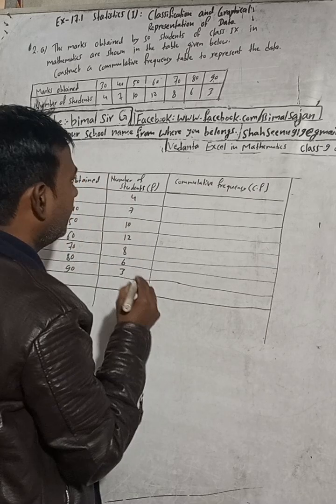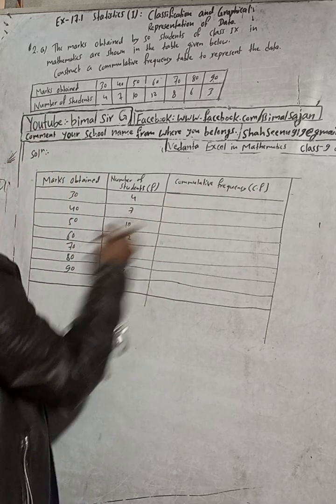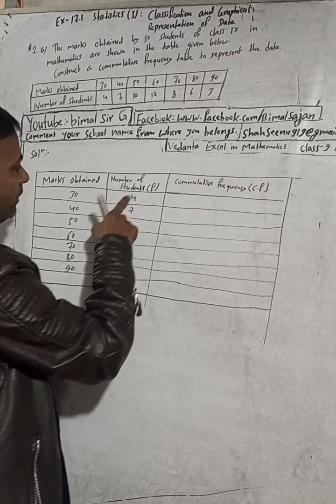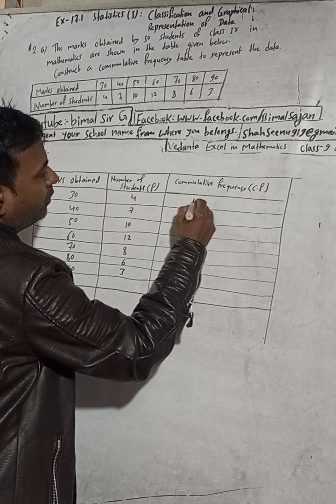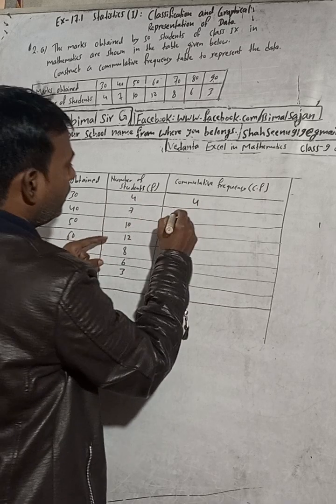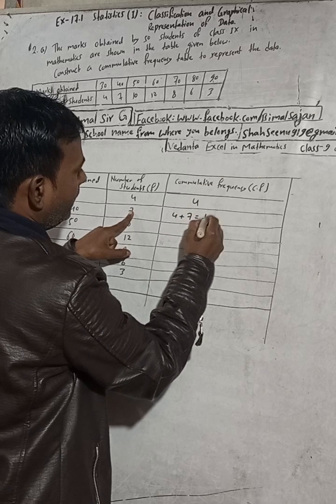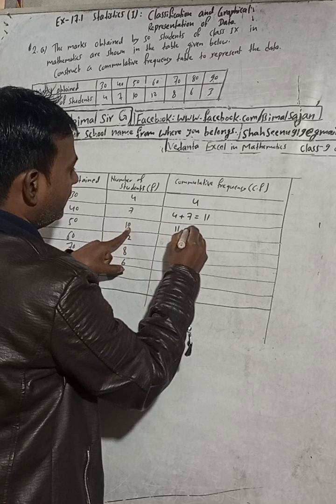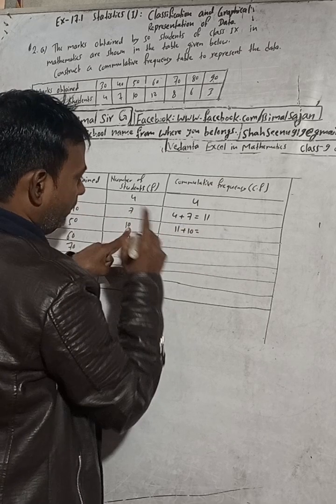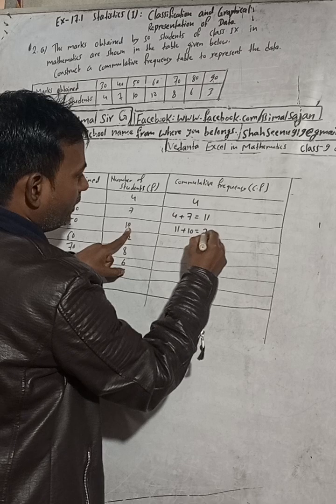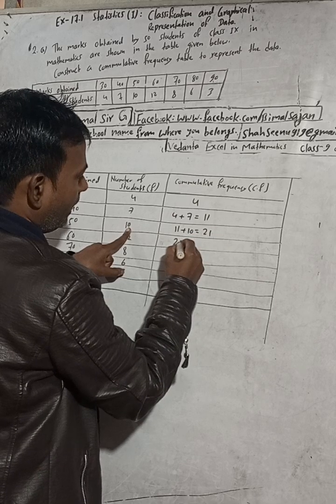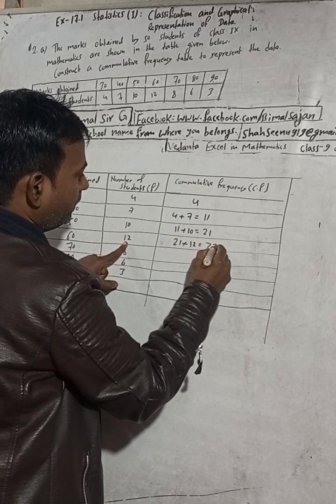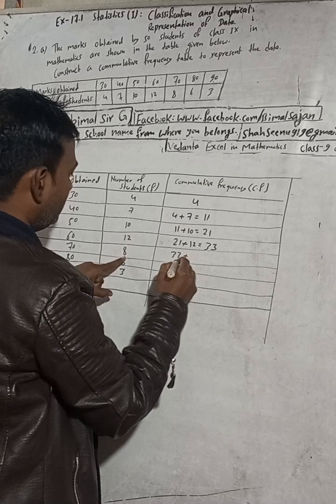Now cumulative frequency. Here we have to write 4 first. This 4 plus this 7, so 4 plus 7 is 11. Write this 11 here. Plus this 10, so 11 plus 10 is total 21. This 21 write here. Plus now this 12, so 21 plus 12 is 33. This 33 write here.